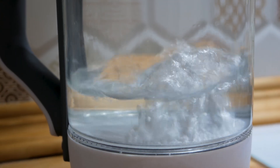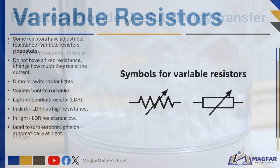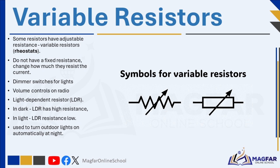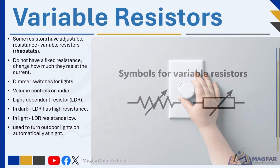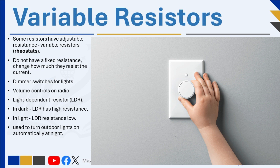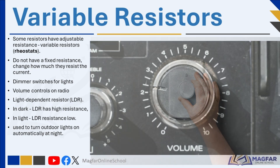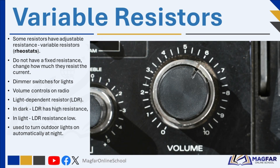Some resistors are adjustable — these are called variable resistors. They do not have a fixed resistance and can change how much they resist the current. Devices like dimmer switches for lights and volume controls on radios use these variable resistors, also known as rheostats.